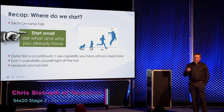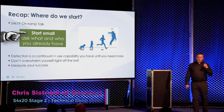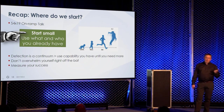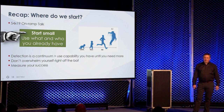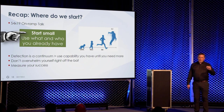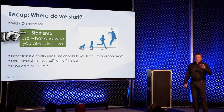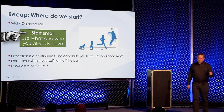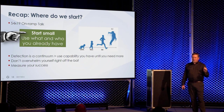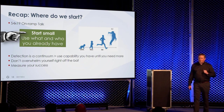To recap: start small. Start with what you have and who you already have. You don't need to buy all the sensors and put them everywhere. Start with the key ingress and egress points and create maybe 10 alerts that are really good for your process. It's a continuum — use what you have until you need more. Crawl, walk, run, and fly. Don't overwhelm yourself right off the bat, and measure what you're doing.